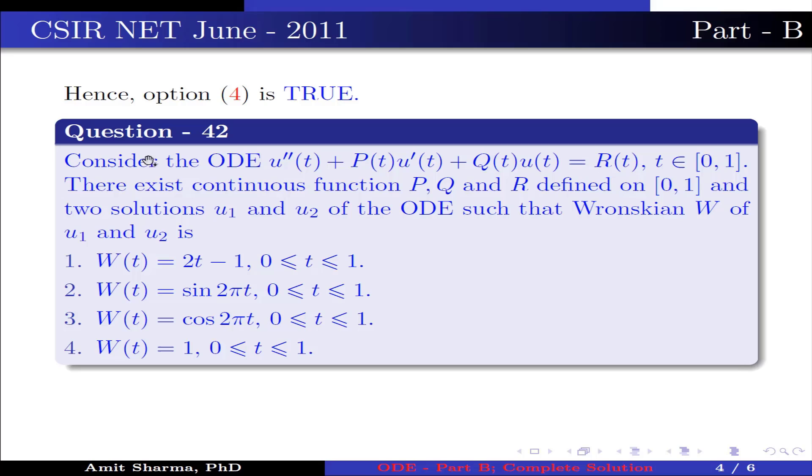Question number 42. Consider the ODE u''(t) plus P(t)u'(t) plus Q(t)u(t) equal to R(t) where t belongs to closed interval [0,1]. There exists continuous function p, q and r defined on [0,1] and two solutions u1 and u2 of the ODE such that Wronskian W(u1, u2) is: option 1, W(t) is equal to 2t minus 1, where 0 ≤ t ≤ 1.